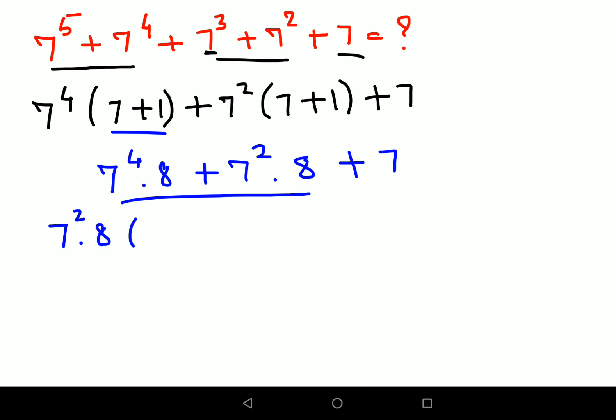So here I am left with, when I take 7 square out of 7 raised to 4, I am just left with 7 square plus 1 plus 7.